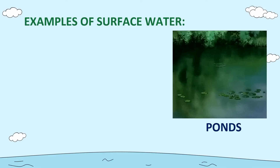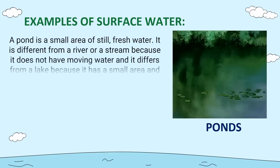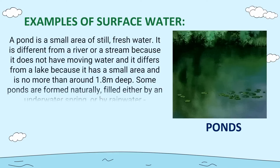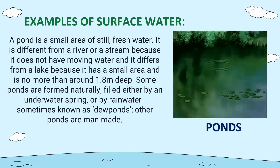Another example of surface water is ponds. A pond is a small area of still fresh water. It is different from a river or stream because it does not have moving water, and it differs from a lake because it has a smaller area and is no more than around 1.8 meters deep. Some ponds are formed naturally, filled either by an underground spring or by rainwater — sometimes known as dew ponds. Other ponds are man-made.